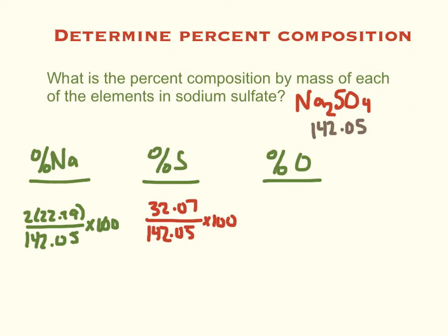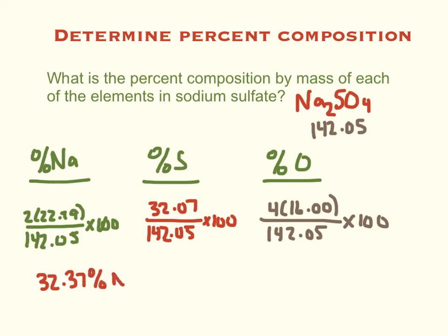And then for my oxygen, there are four of them, so it's 4 times 16.00, or 64.00, which would be the total, 142.05 times 100. And when I do the math on each one of these, this is what I end up getting. I get 32.37% Na. 32.37 of the total mass is due to the sodium, and then 22.58% is due to the sulfur, and then 45.05% is due to the oxygen.